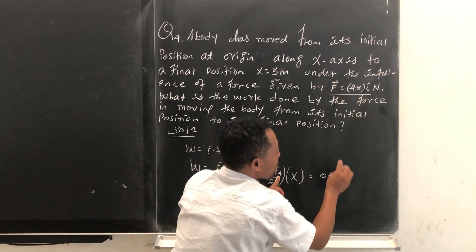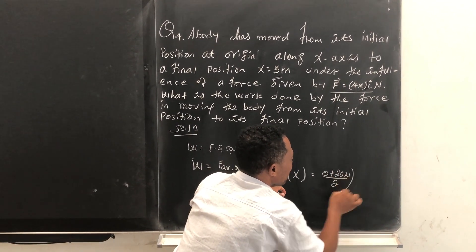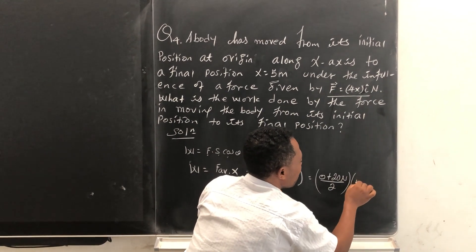So 20 newton over two, and then times five meters.